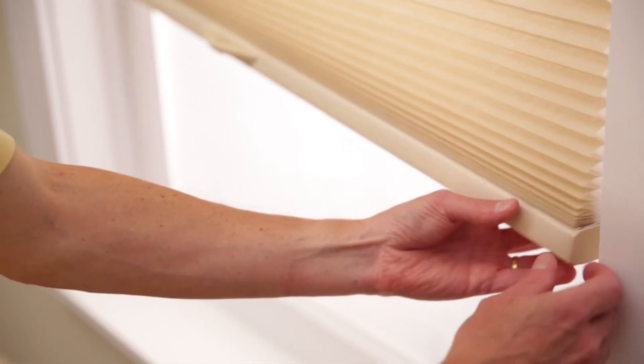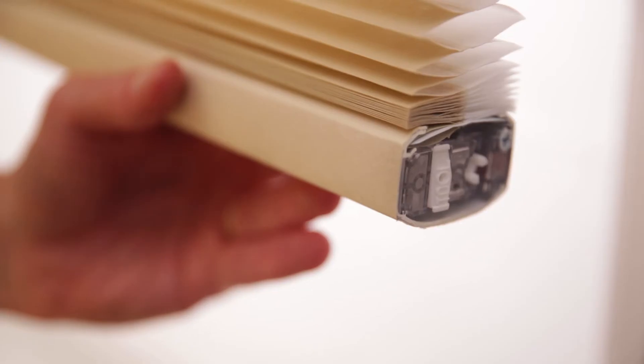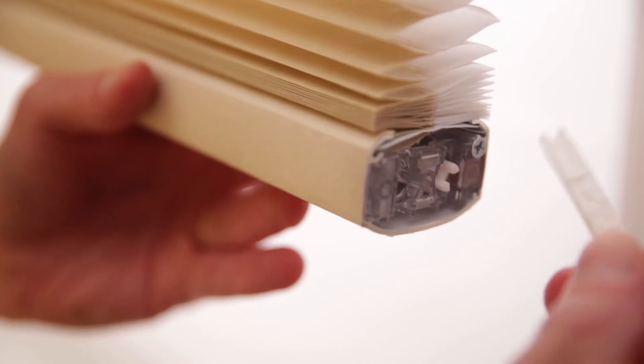Start by removing the right end cap of the bottom rail. Remove the small white plastic tool located inside the bottom rail.